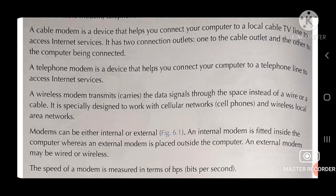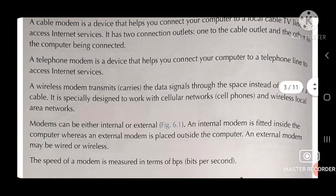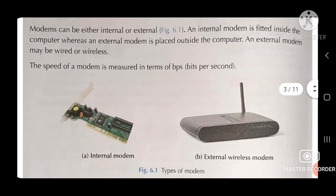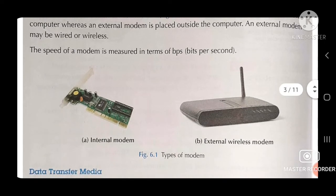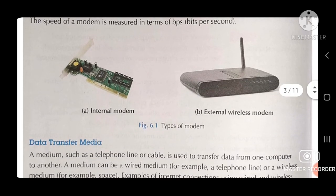A wireless modem transmits and carries data signals through space instead of a wire or a cable. It is specially designed to work with cellular networks, cell phones, and wireless local area networks. A modem can be either internal or external. An internal modem is fitted inside the computer, whereas an external modem is placed outside a computer. An external modem may be wired or wireless. The speed of a modem is measured in terms of BPS — bytes per second. This is the picture of an internal modem, and the next picture shows a wireless modem.